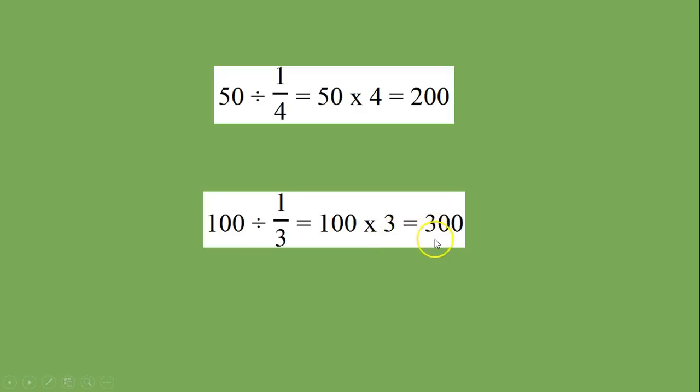So the reason we can invert and multiply when dividing fractions is due to the equal groups nature of the reciprocal. Four as a reciprocal represents four one fourths for every whole. Three represents three one thirds for every whole and so on. This is why we can use this procedure when dividing fractions.